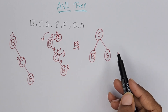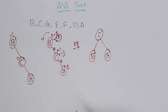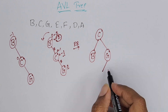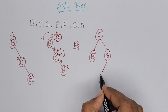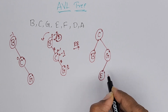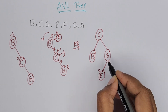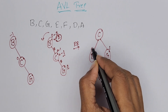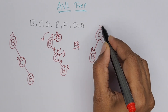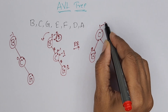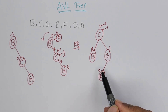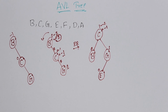We can add the next character. After G, the next character is E. E is greater than C and E is less than G. Add left side of G. Again, we have to write balance factors. 0. For G, 1 minus 0 it is 1. B is 0. For C, left subtree height is 1, right subtree height is 2. 1 minus 2 it is minus 1. It can be 1, 0, or minus 1. Again, it is balanced.